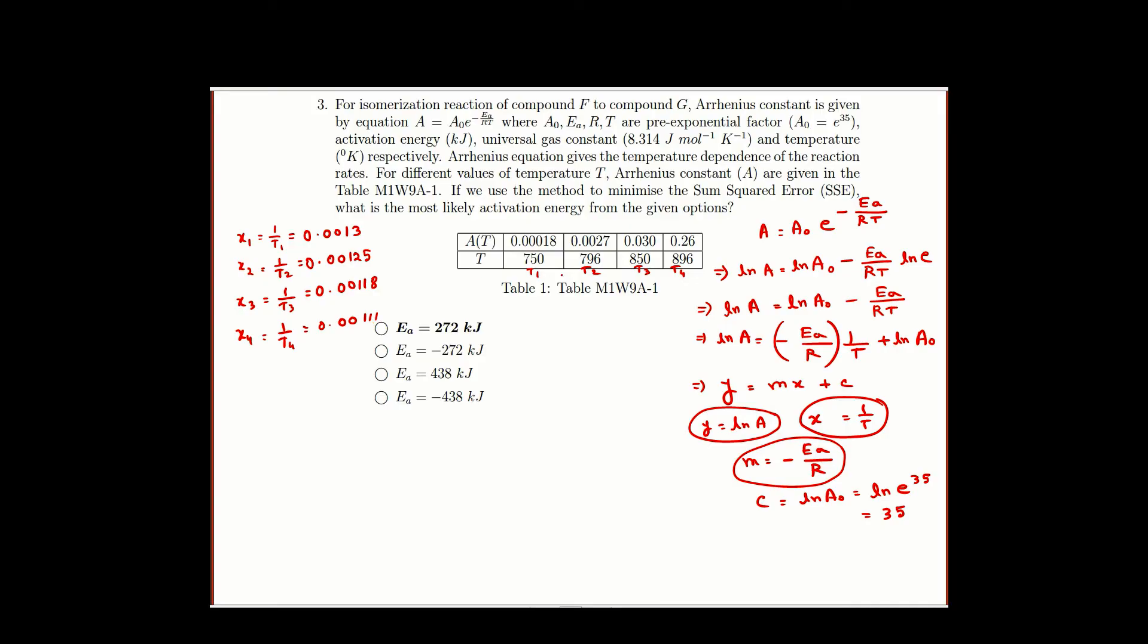For different xi we will get different yi using this equation where m will vary depending on these 4 options. So there are 4 possible m. Let us write this for option 1. I am writing it as m1.